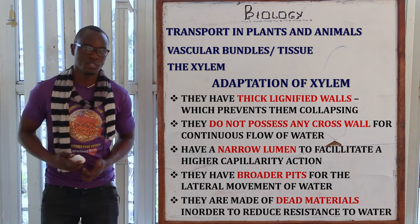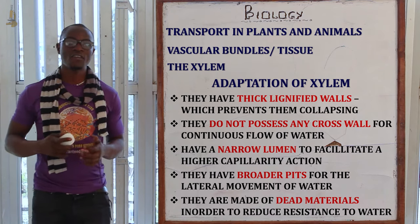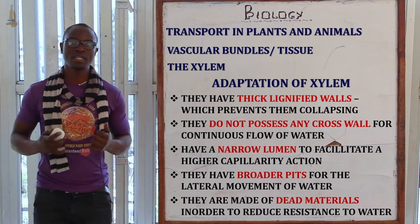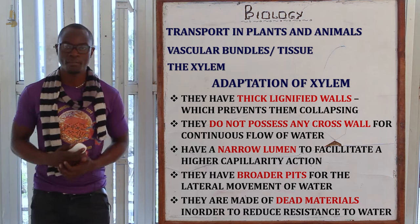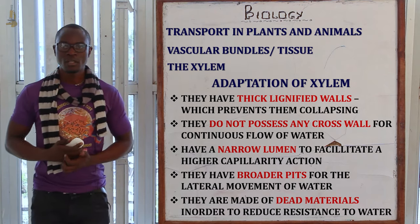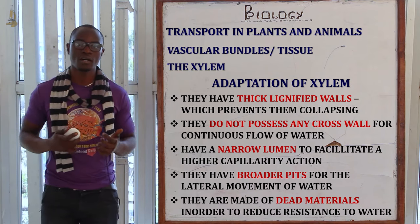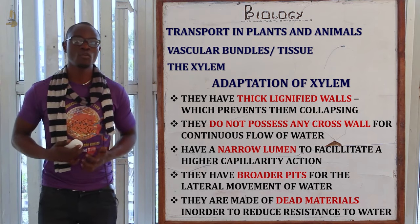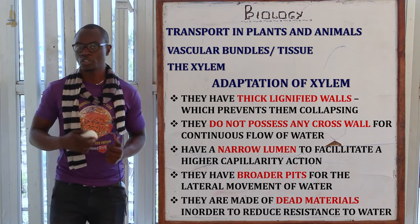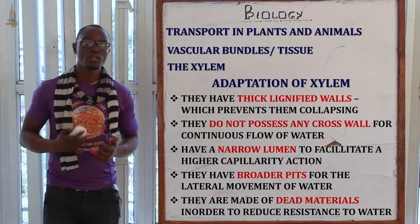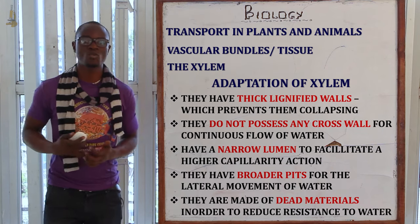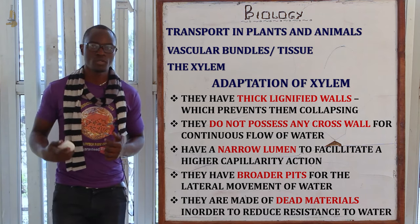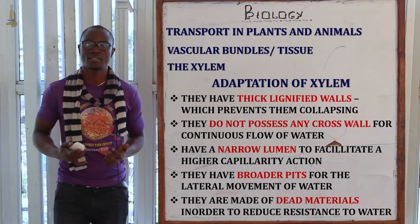Adaptations of the xylem to its functions: they have thick lignified walls — lignin mainly prevents the xylem from collapsing and serves as a supporting structure. They do not have cross walls, allowing continuous flow of water. They have a very narrow lumen to facilitate capillarity of water. They have broad pits to allow lateral movement of water. They are made of non-living material, which reduces resistance to water flow inside the xylem tissue.